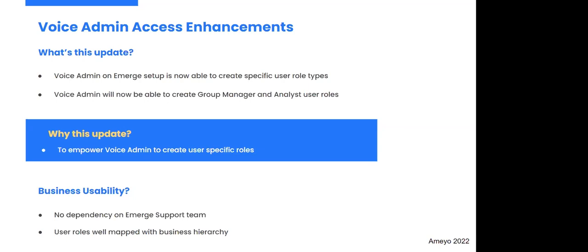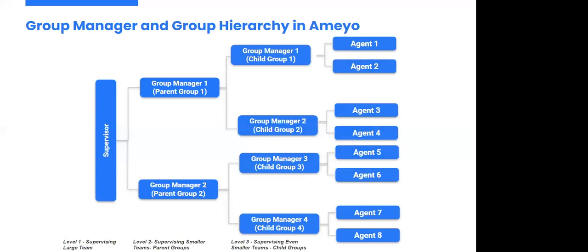Business benefits of this update include: no dependency on AMEO's support team — the voice admin can create users himself without relying on support. Another benefit is that user roles are well-mapped with the business hierarchy. If a business needs specific roles around group manager or analyst, the voice admin can readily create them without waiting or going back and forth with the support team. He'll be able to do this himself in just a few minutes.